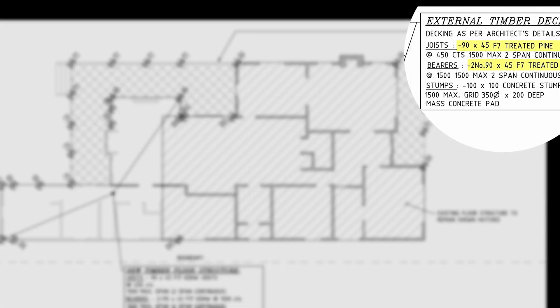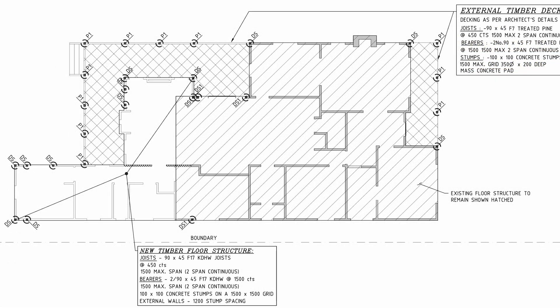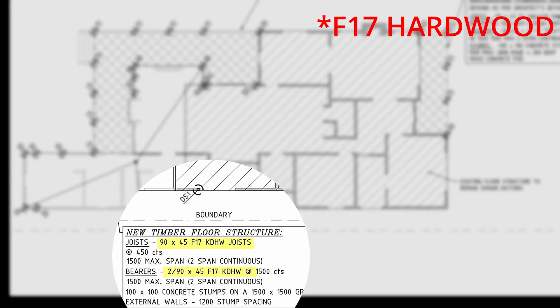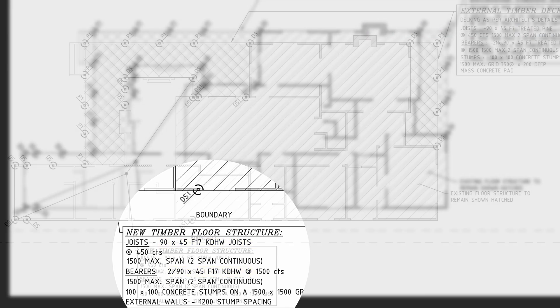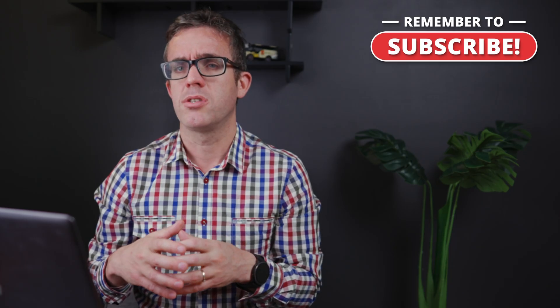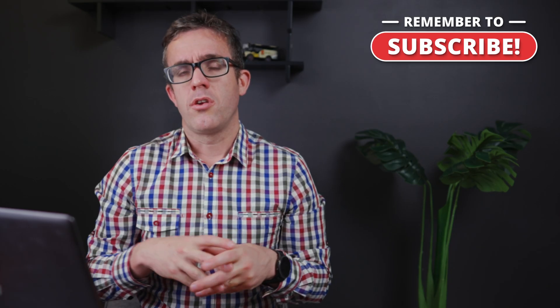Externally we're using an F7 treated pine, while internally we can see that we're showing an MGP 10 timber, which is generally slightly better and slightly cheaper. However, it's more suited for those internal uses.